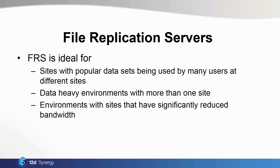The FRS is really ideal for sites with popular data sets that are being used by many users at different sites. Rather than making them all wait for it to be downloaded the first time they open it, you can push it out to the local network to make it much faster. It's great for data-heavy environments with more than one site — so if you've got really large ECWs and you don't want people to pull those down all the time, you can have those pre-populated onto the remote office FRS. Alternatively, it's very good for environments with sites that have significantly reduced bandwidth. If you've got a temporary site office that may not have the best internet connection, the FRS can help by transferring the data during people's downtime or when they're away from the office.